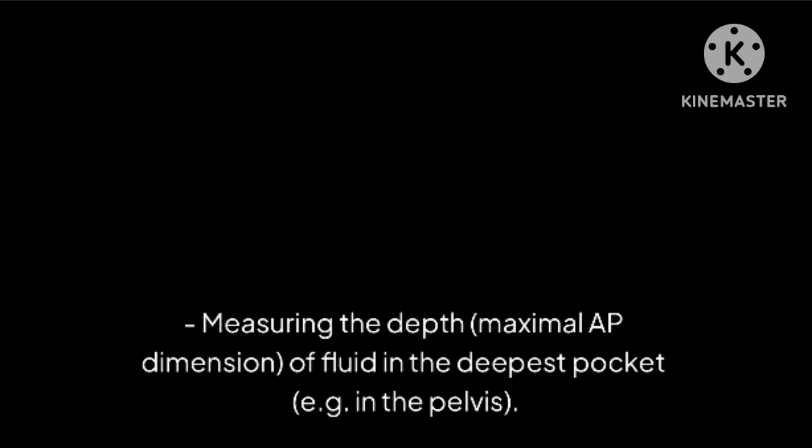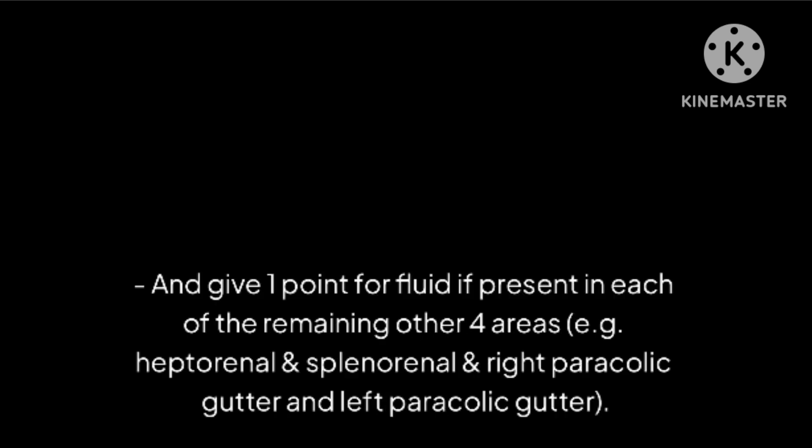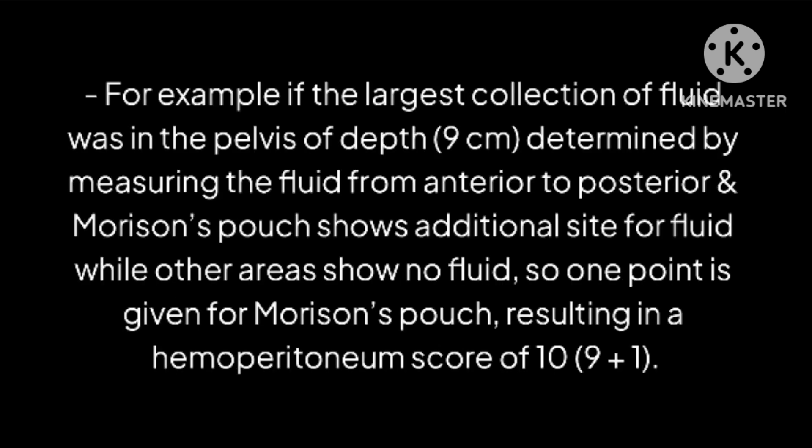B. Second scoring system: measurement plus points in other four areas. Measure the depth (maximal anteroposterior dimension) of fluid in the deepest pocket, for example in the pelvis, and give one point for fluid if present in each of the remaining other four areas: hepatorenal, splenorenal, right paracolic gutter, and left paracolic gutter. For example, if the largest collection of fluid in the pelvis has a depth of 9 centimeters, determined by measuring the fluid from anterior to posterior, and Morrison's pouch shows an additional site for fluid while other areas show no fluid, then one point is given for Morrison's pouch, resulting in a hemoperitoneum score of 10 (9 plus 1).